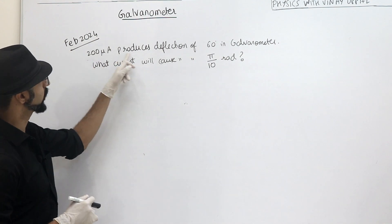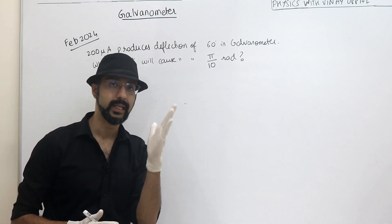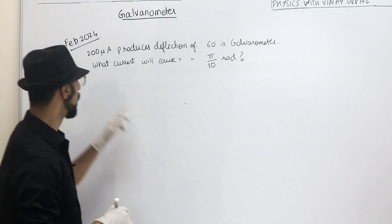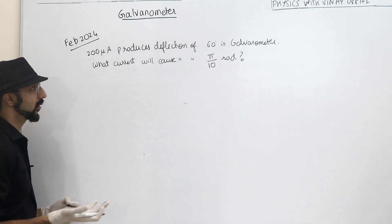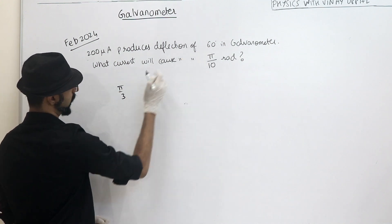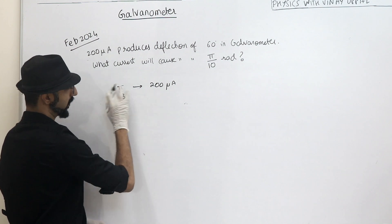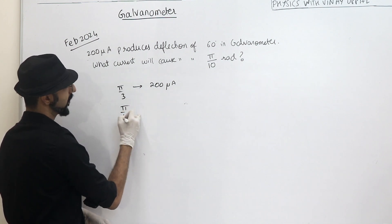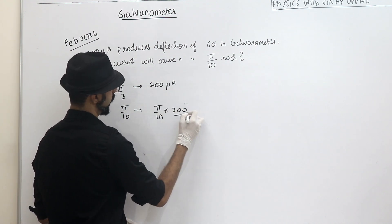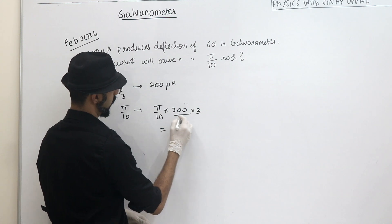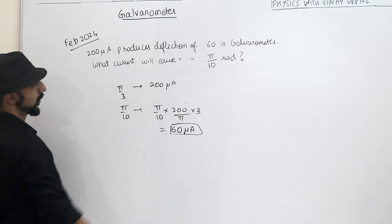Let's look at another question. 200 microamperes produces a deflection of 60 degrees in a Galvanometer. We know deflection is proportional to current. How much current will cause a deflection of π/10 radians? 60 degrees equals π/3 radians, which is produced by 200 microamperes. By unitary method, current for π/10 deflection = (π/10) × 200 / (π/3) = 60 microamperes.